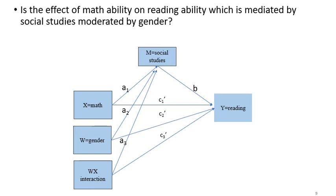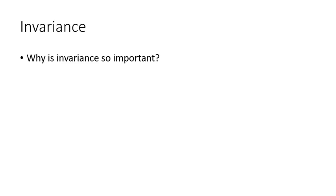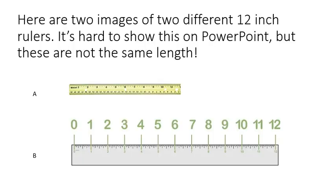I want to talk about another application of multiple groups, and that is invariance. What is invariance and why is it so important? Invariance means the measurement instrument does not vary across groups or across measurement occasions — that is why it is called invariant. It's unfortunate that we use this term because it is not easy to understand. Invariant means it does not vary. But if you start to use it, I'm sure you'll be able to manage just fine.